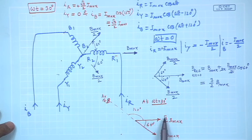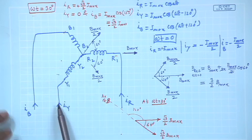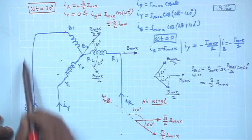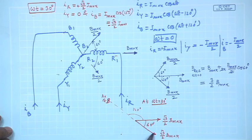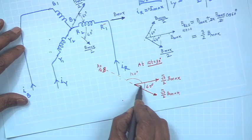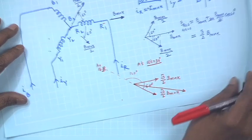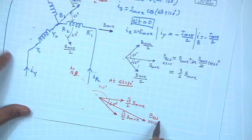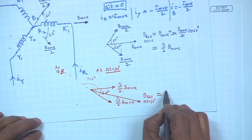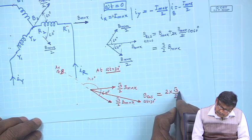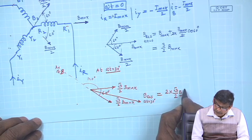I found out the R phase field; Y phase field is not there. The axis of B is 120 degrees apart and it is carrying negative current, therefore the field will be like this. So the resultant field will lie here, and the B resultant at omega t equal to 30 degrees will be just 2 times root 3 by 2, B max and cosine 30 degrees.